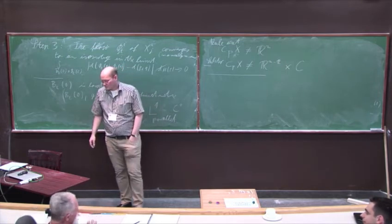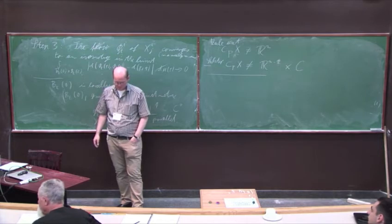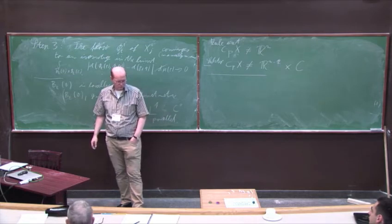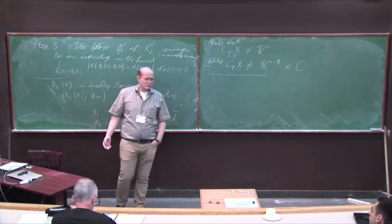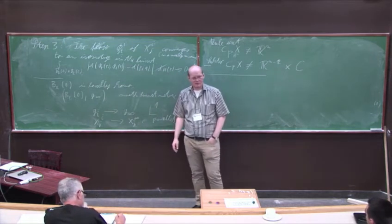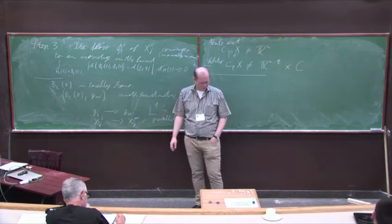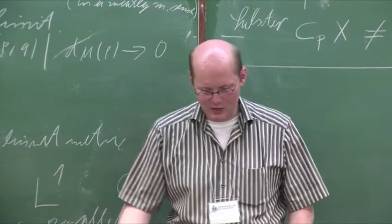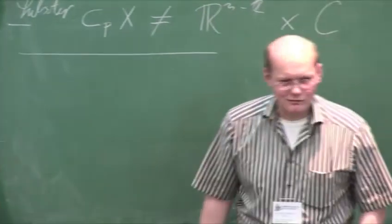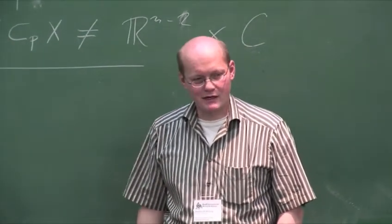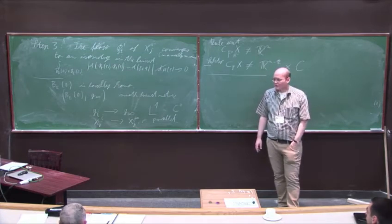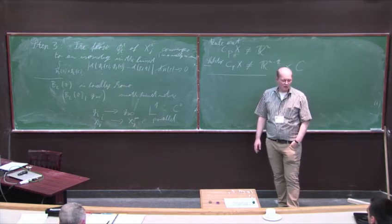Question: Is it possible to replace the lower curvature bound by some integral bound? You could try to replace it by an LP bound. Certainly not an L1 bound, and you cannot replace it by a Ricci curvature bound. In principle you could replace it by an LP bound with P larger than N over 2, but not exactly N over 2.